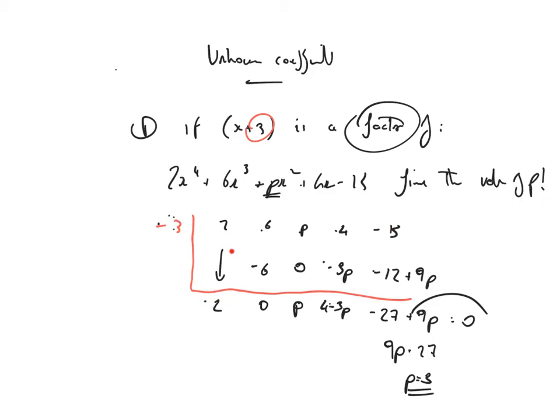2 times minus 3, minus 6, minus 6 plus 6, 0. 0 times minus 3 is 0. So p plus 0 is p, p times minus 3 is minus 3p. I've then got minus 3p plus 4, and I've written that's 4 minus 3p, same thing. Multiply that by minus 3, 4 times minus 3 is minus 12, minus 3p times minus 3 is plus 9p.